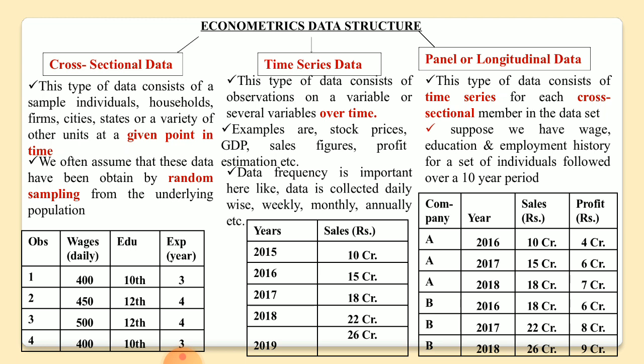The key difference between time series data and panel data is: in time series data we have only one observation — for example, one company's sales data collected over a period of time. But in panel data, we have multiple observations — multiple companies — and for all those companies we collect data over the period of time. The choice of data set — cross-sectional, time series, or panel — depends upon the objective and the nature of the research.